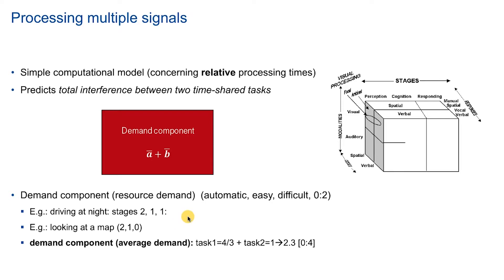So let's assume we have two tasks. One is driving at night and one is looking at the map at the same time. Here we just associate the task component or the task demand according to the three stages that we have: perception, cognition and responding. We just assign values from zero for automatic to two for difficult to these stages. For example, driving at night would be rather difficult from a perceptual point of view, so this would be two. And cognition and responding, the processing and the driving itself might be not totally automatic but easy, so there would be two ones.